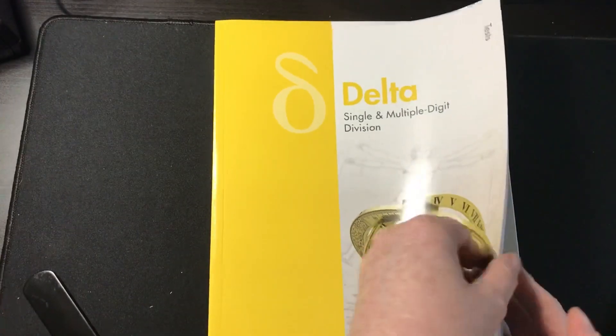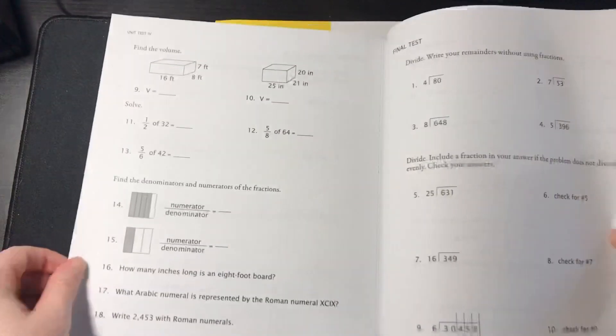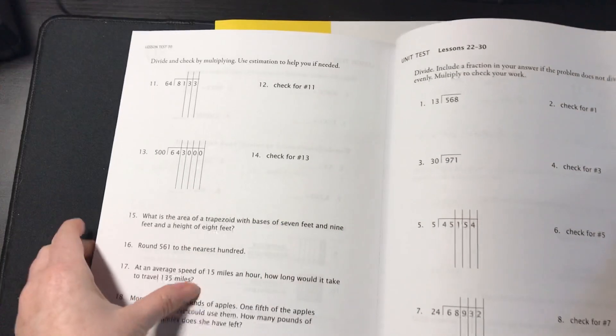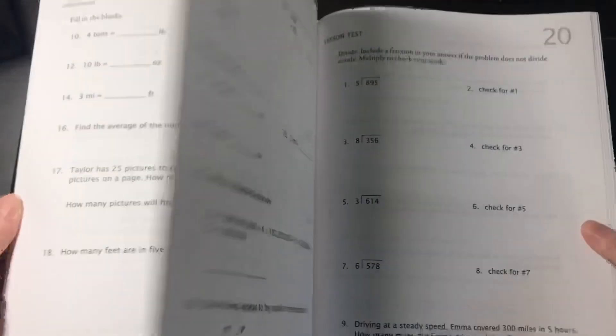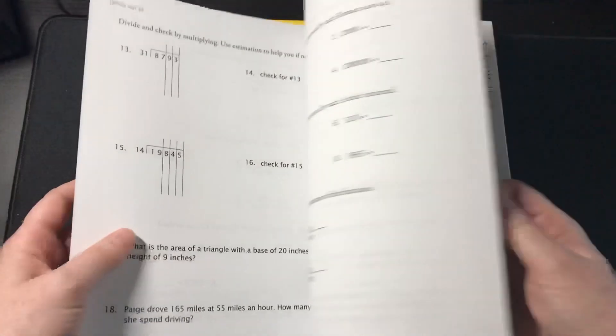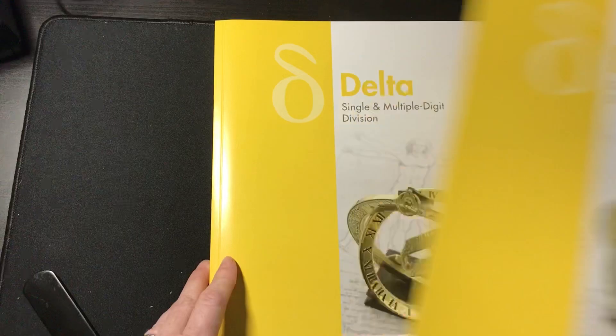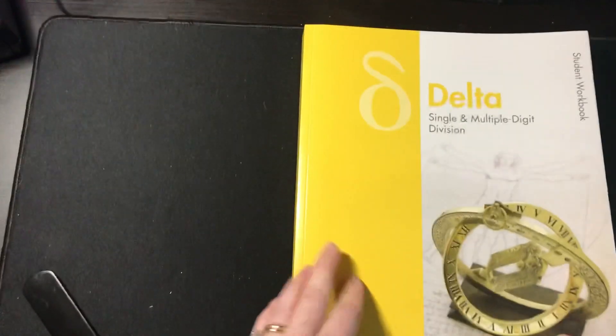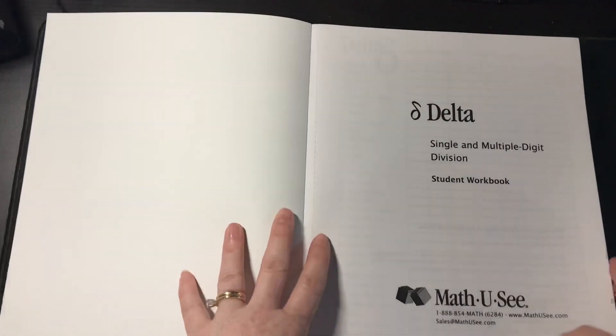Then we have the tests and that's just what it says. There's a test for each lesson. If you're unfamiliar with Math-U-See, Math-U-See has 30 lessons and then it has unit tests and a final test. So there's a test for each lesson and then unit tests and one final test. The nice thing about Math-U-See is that it only has 30 lessons, so you can usually finish it easily in a school year. However, each lesson has multiple days of worksheets and I'll show you that.